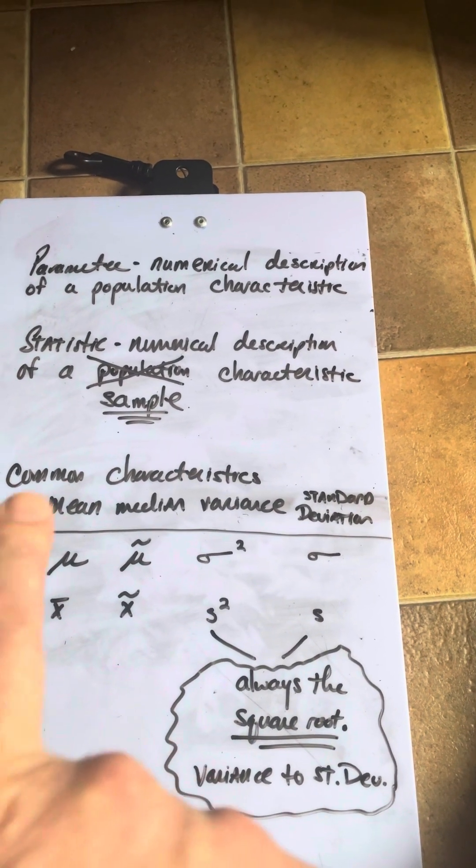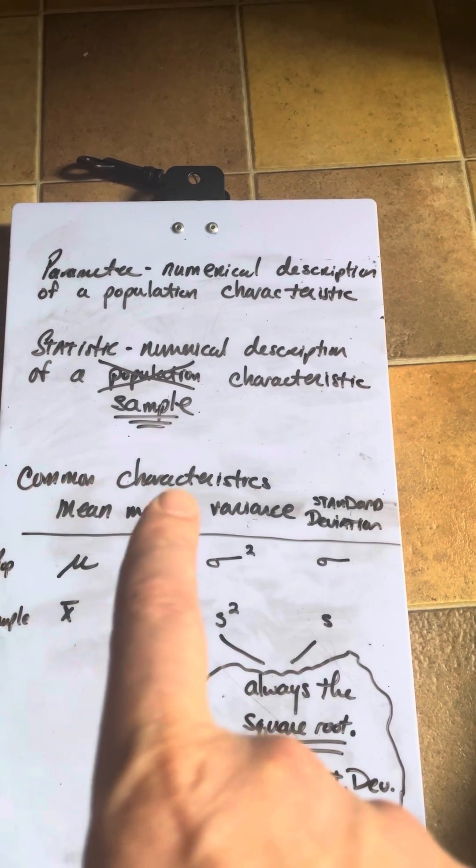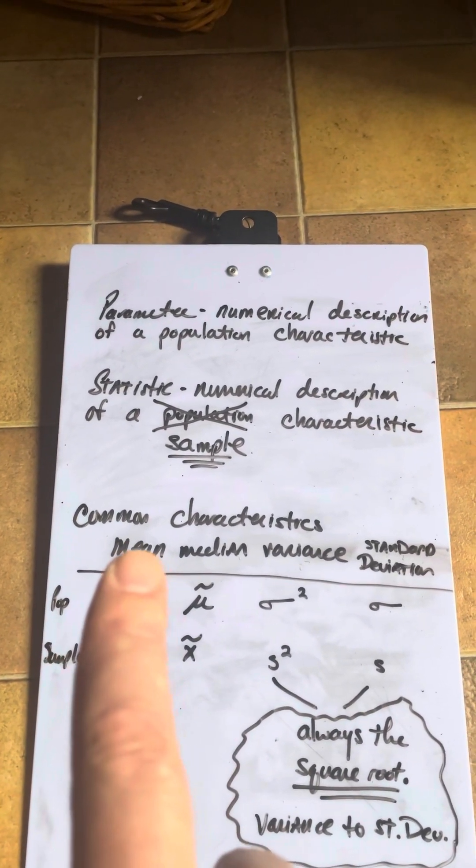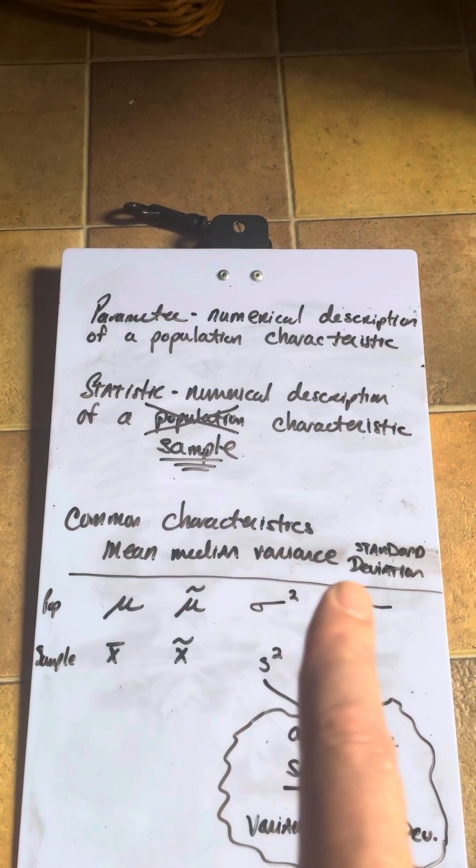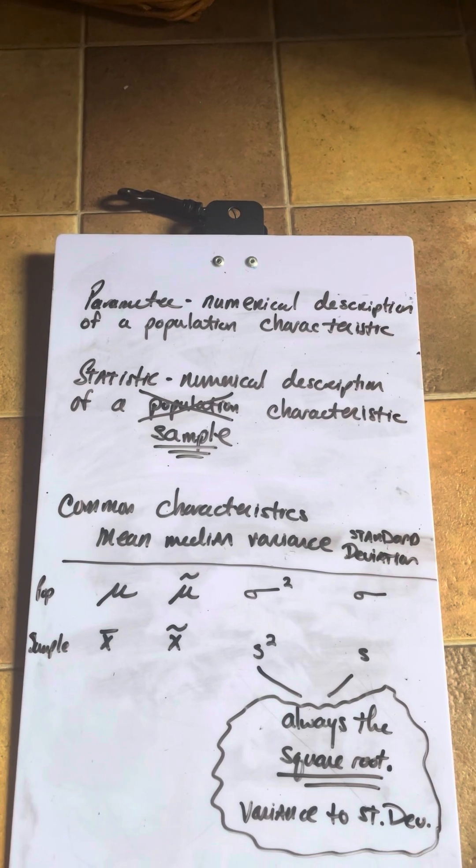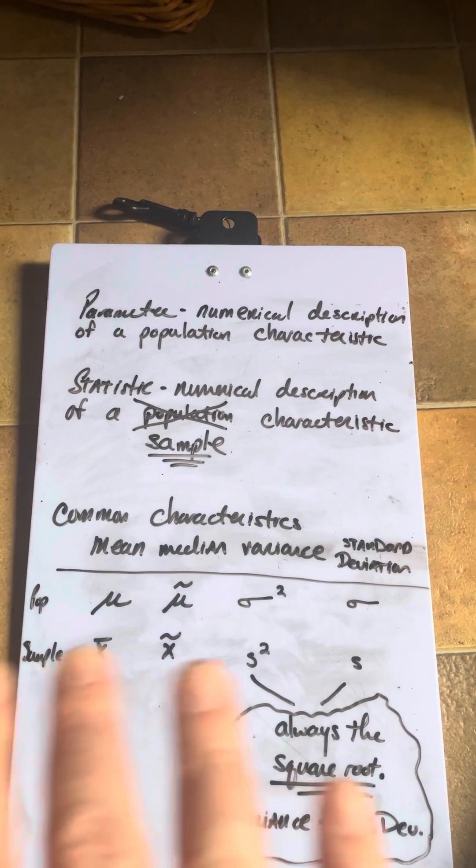The statistic is a numerical description of a sample characteristic. Now, what is a characteristic? Well, common characteristics that we use in statistics are the mean, the median, the variance, and the standard deviation. There are other ones and we'll run across those as we travel through the course. But I want you to get used to these right away.